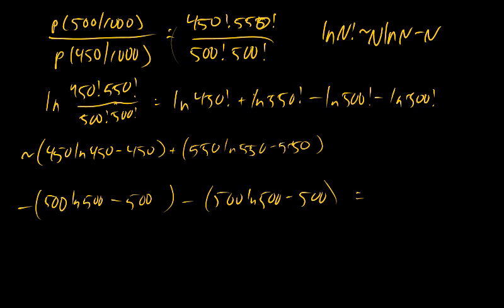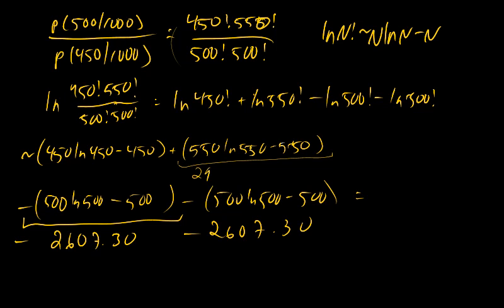So what we have then is each of these numbers. This number here, you can get from the calculator, turns out to be 2607.30, and then we have minus 2607.30. This one is 2920.45, and this one is 2229.16. And so we add that, and then we subtract the other ones, and when we do that, we get an answer of about 5. And this is the natural log